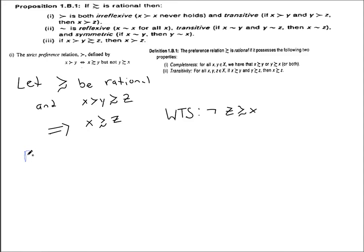So by way of contradiction, we'll assume z is weakly preferred to x. And then from that we can recall we assumed y was weakly preferred to z.